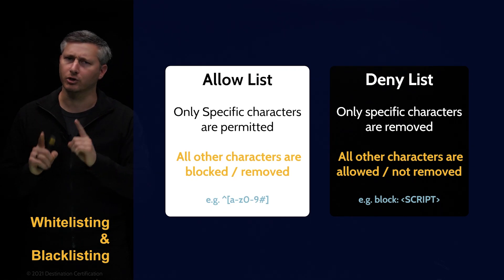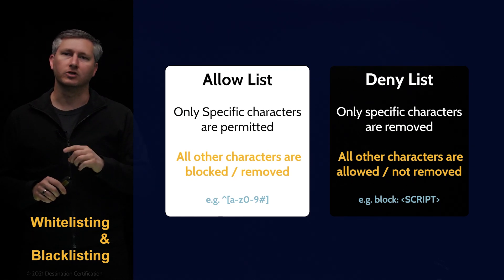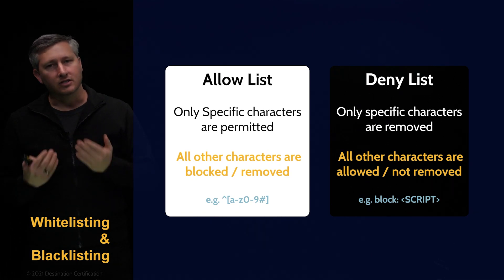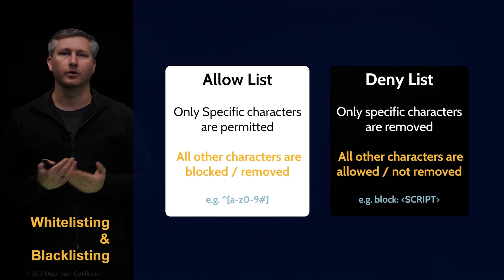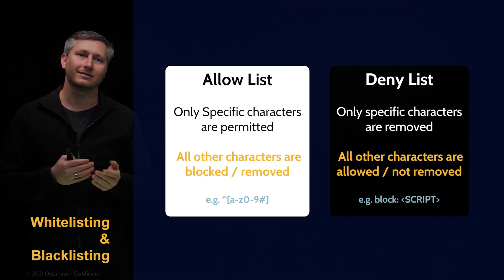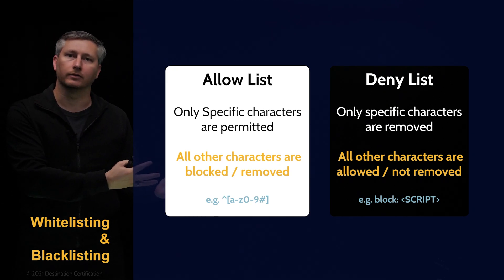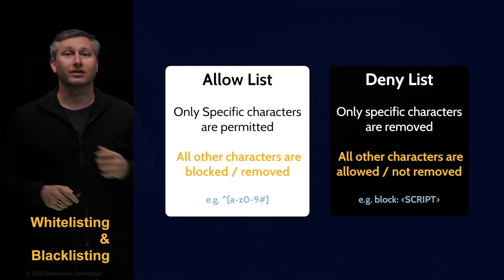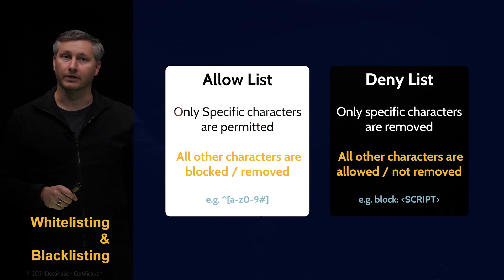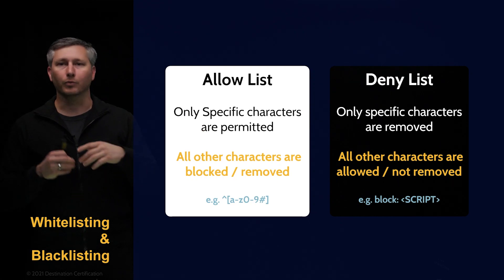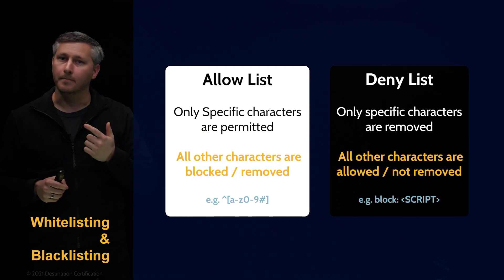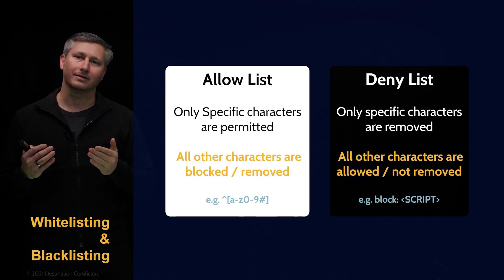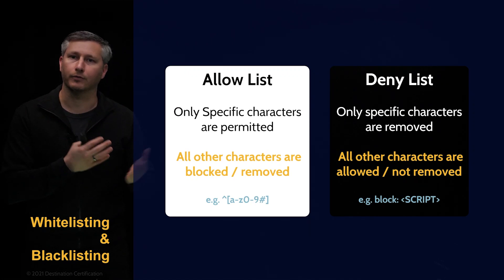A quick comment on terminology: the industry is moving towards allow lists and deny lists. Historically, the terms used were white lists and black lists — a white list is the equivalent of an allow list, and a black list is the equivalent of a deny list. The reason I bring this up is that the exam might still use the terms white lists and black lists, so I just wanted to highlight that for you.